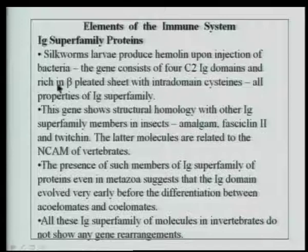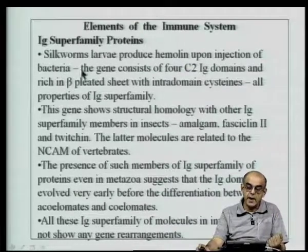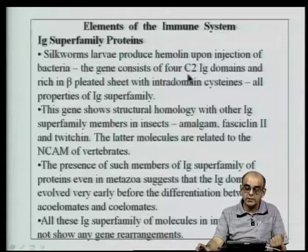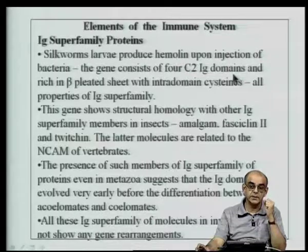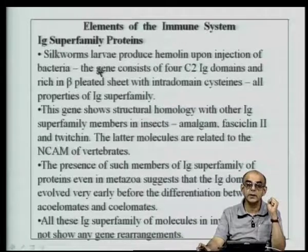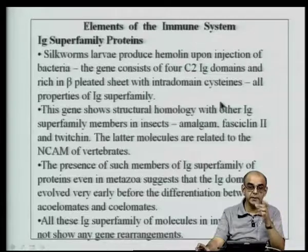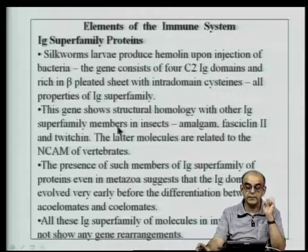Coming on to the immunoglobulin superfamily of molecules, silkworm larvae produce a molecule called hemolin. Upon bacterial infection of silkworms — important in the silk industry — hemolin is secreted and this gene consists of four C2 immunoglobulin-like domains, similar to the C2 domain present in IgG, making it a member of the immunoglobulin superfamily. It is rich in beta-pleated sheets and has intra-domain cysteines, characteristic of the immunoglobulin fold.